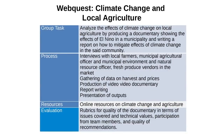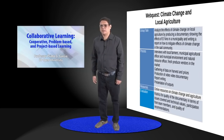Let's look at a WebQuest on climate change and its effects on local agriculture. The task of the group is to analyze the effects of climate change on local agriculture by producing a video documentary showing the effects of El Niño in a municipality and writing a report on how to mitigate those effects. The group members need to interview local farmers, the municipal agricultural officer, the municipal environment and natural resources officer, and fresh produce vendors. They gather data on harvests and prices, produce the video documentary, write a report, and present their outputs. Online resources were articles on climate change and agriculture. Assessment used rubrics for documentary quality, team participation, and quality of recommendations.